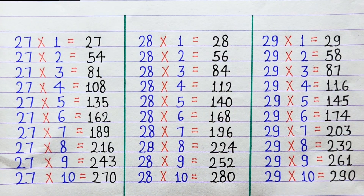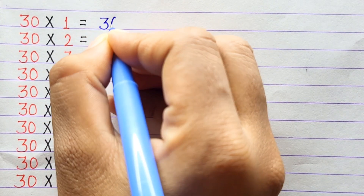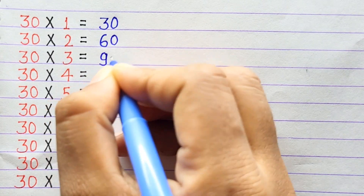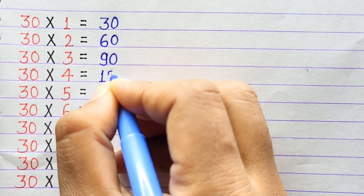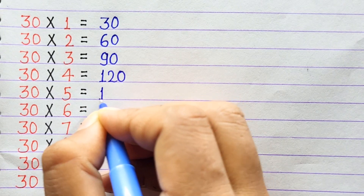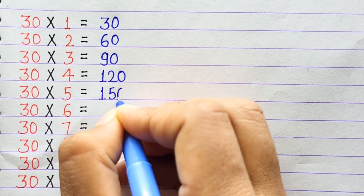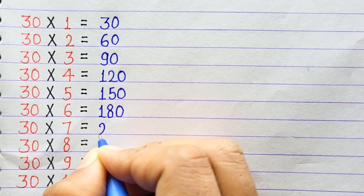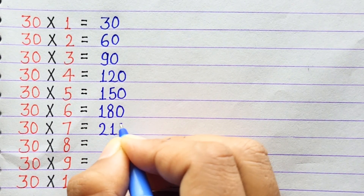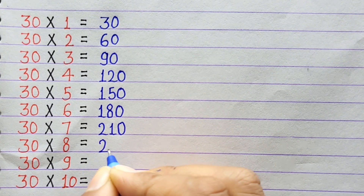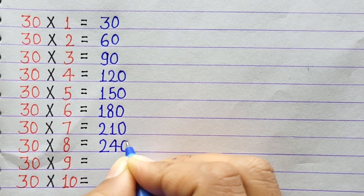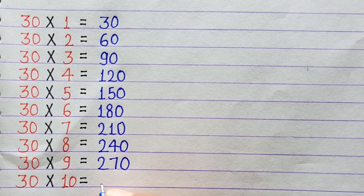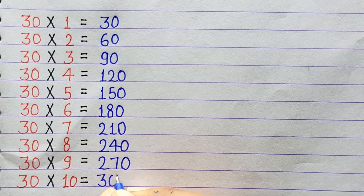30×1=30, 30×2=60, 30×3=90, 30×4=120, 30×5=150, 30×6=180, 30×7=210, 30×8=240, 30×9=270, 30×10=300.